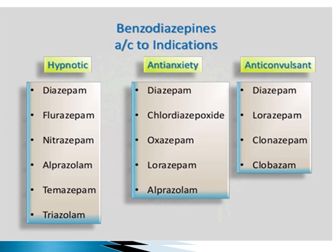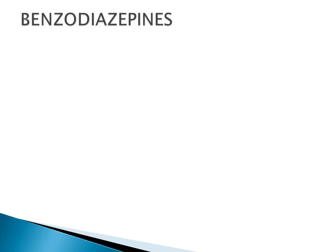Benzodiazepines can also be classified according to their clinical uses as: hypnotic benzodiazepines, anxiolytic benzodiazepines, and anticonvulsant benzodiazepines. Benzodiazepines are anxiolytic, hypnotic, centrally acting muscle relaxants, and they also have anticonvulsant properties.